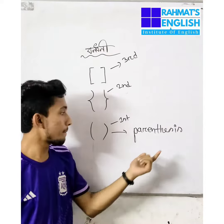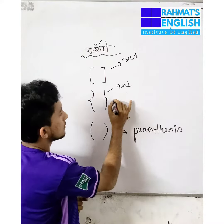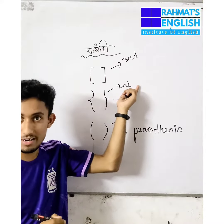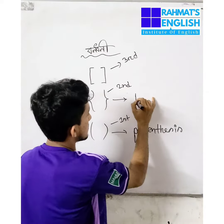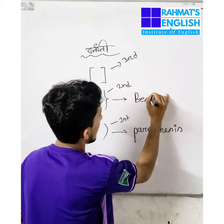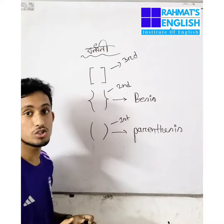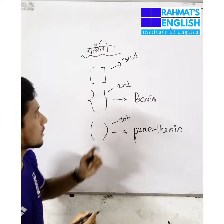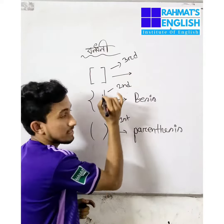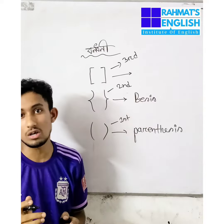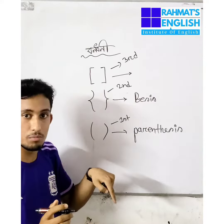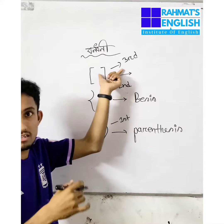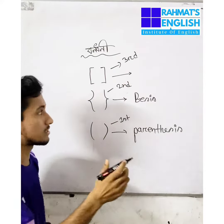So what do we say in English? The second bracket is called 'Brace' — spelled B-A-A-S-I-S. This brace is the second bracket, as you can see. And the third bracket, we call it 'Brackets'.